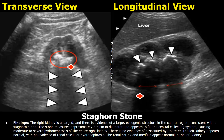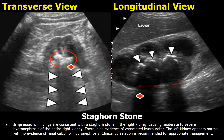If there is hydrouretor present, you can write about that. Then you can write about the appearance of the other kidney. This is the impression. Findings are consistent with a staghorn stone in the right kidney, causing moderate to severe hydronephrosis of the entire right kidney. There was no associated hydrouretor and the left kidney was normal. Clinical correlation is recommended for appropriate management.